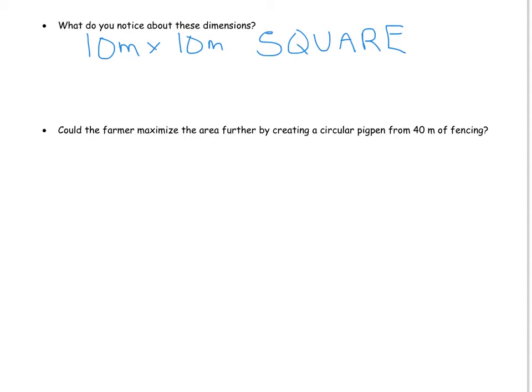So then the question becomes, could this farmer maximize the area further by creating a circular pig pen from 40 meters of fencing? I want to take a look at what we would do if we were looking with a circle. Again 40 meters of fencing would be available and that's dealing with the perimeter. In a circular case, that's actually the circumference. So now I want to look at it a little bit more algebraically with our formula.